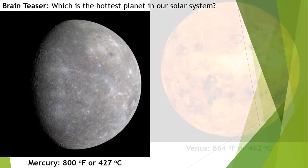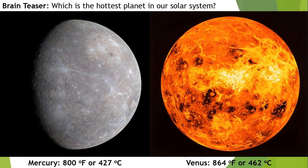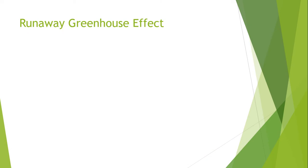So this is a brain teaser. We all know that in the solar system, Mercury is near to the sun but Venus is far away from it. The temperature at Mercury is about 800 degrees Fahrenheit or 427 degrees centigrade, whereas Venus is at 864 degrees Fahrenheit or 462 degrees centigrade. So as we think that because Mercury is closer to the sun it should have been warmer, but on the contrary, Venus is hotter as compared to Mercury. This effect is due to the runaway greenhouse effect.